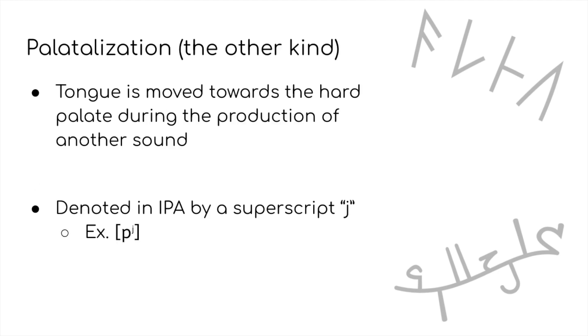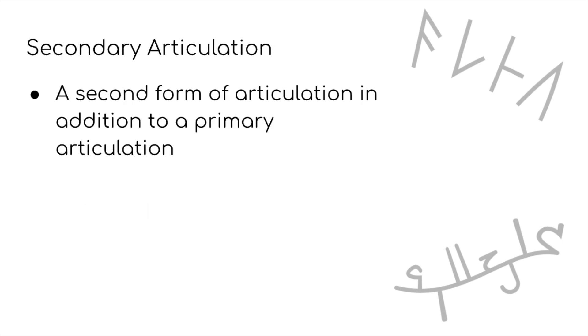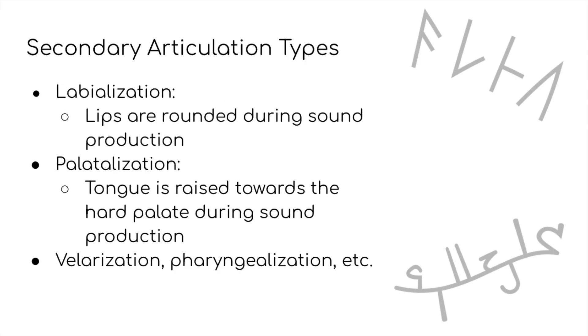This could take the form of a secondary articulation, confusingly also called palatalization, where the tongue is moved towards the hard palate during the production of the sound. As a quick side note, secondary articulations in general refer to a second form of articulation that occurs simultaneously with the primary articulation of the sound, and they can be a fun thing to mess around with. Examples include labialization, where the lips are rounded during the production of another sound, as well as the aforementioned palatalization and others.